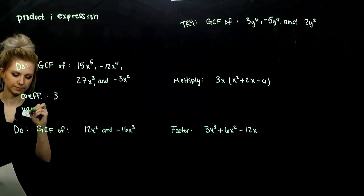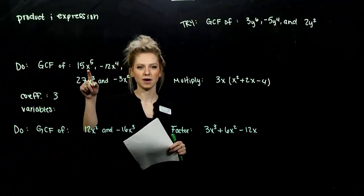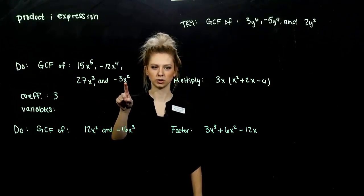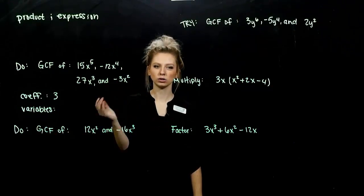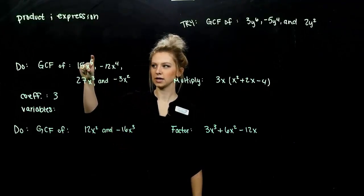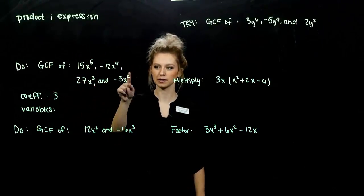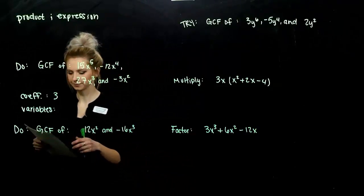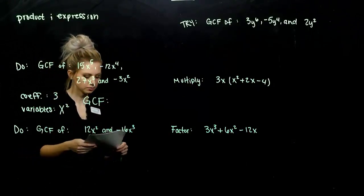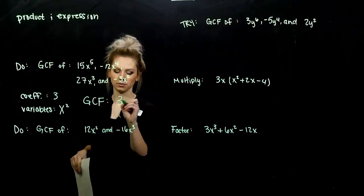For the variables, looking at the factors of x that I have: I've got 5 being multiplied here, 4, 3, and 2. The greatest number that they all share in common that I could take out is 2, because I can take 2 factors out of 5, 2 out of 4, 2 out of 3, 2 out of 2. So x squared is the largest we can take out. All together, the greatest common factor — GCF — is going to be 3x squared. It's the largest thing that they all share in common that I could take out of every single one.